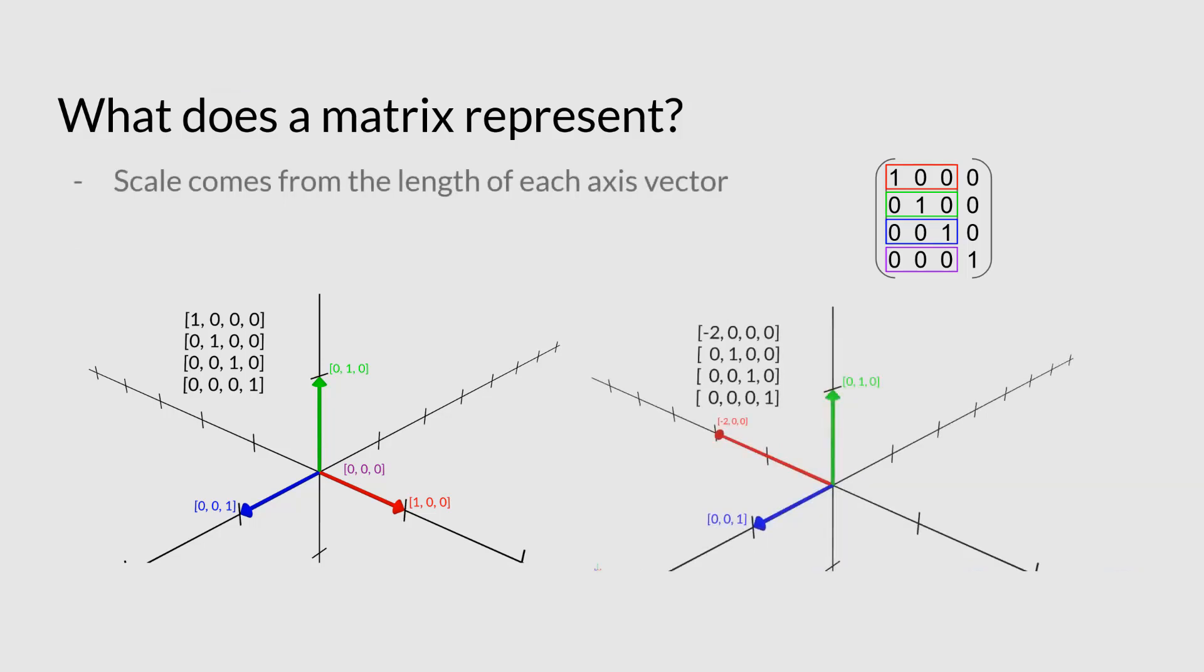So what we can also do with this is get a scale out of this. Now the scale basically comes from the length of the axis. So you can see here, if I basically say that the x-axis is going minus 2, that will basically give this transform a scale of minus 2 in the x-axis, while it will have 1 in y and 1 in z, because that's the length of those vectors, of the vectors representing those axes.